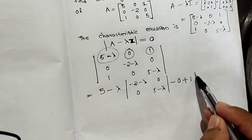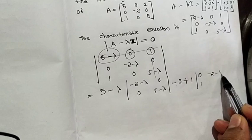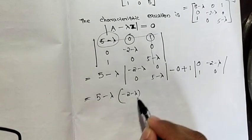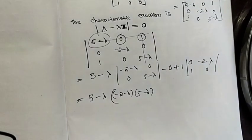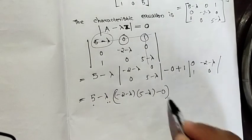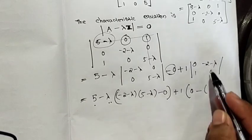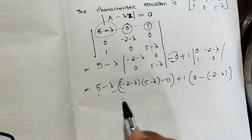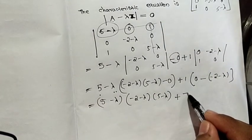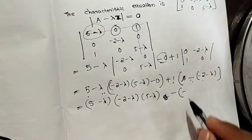Now we expand the determinant. We multiply out the terms: minus 2 minus lambda, and 5 minus lambda appear as factors. We expand, noting that zero terms drop out. We get minus 2 minus lambda into 5 minus lambda, plus cross terms that multiply to zero, giving us the characteristic polynomial.